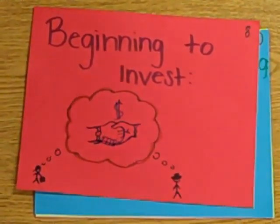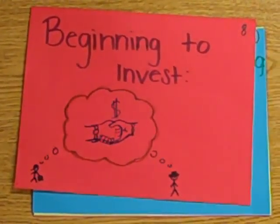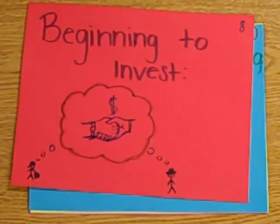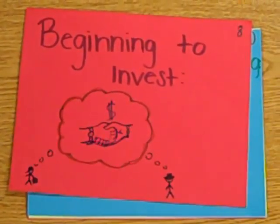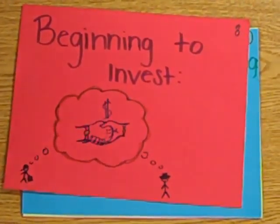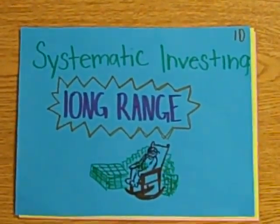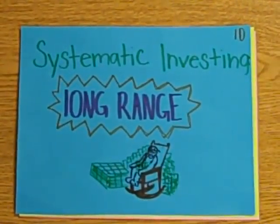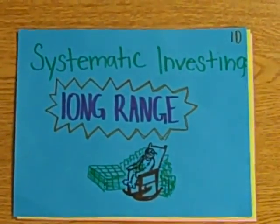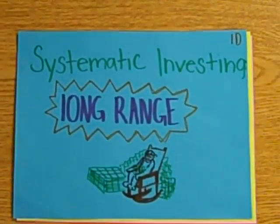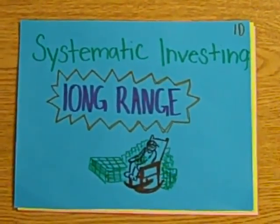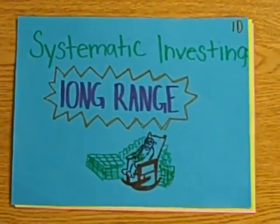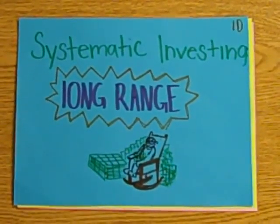The second step is beginning to invest. This is when you've saved enough money to begin investing and you start investing. Systematic investing is when you've had a little experience investing, so you are ready to start investing towards something like retirement.